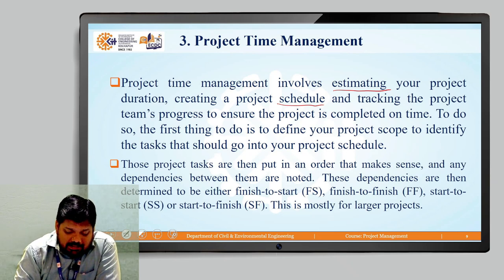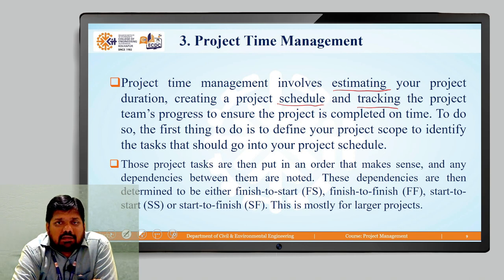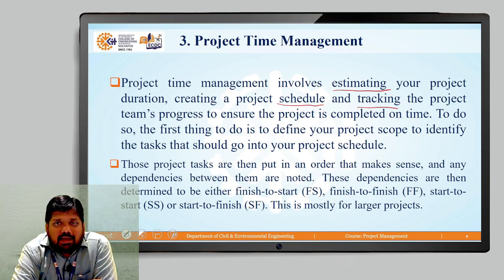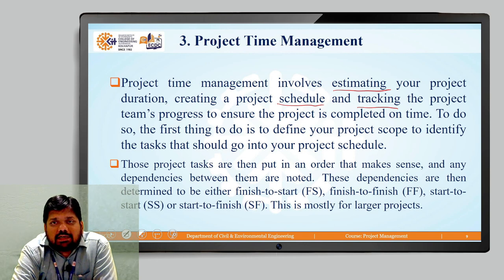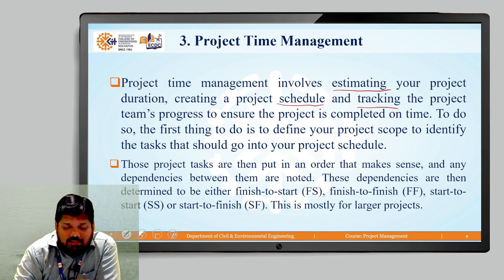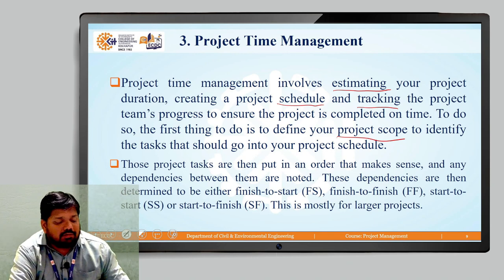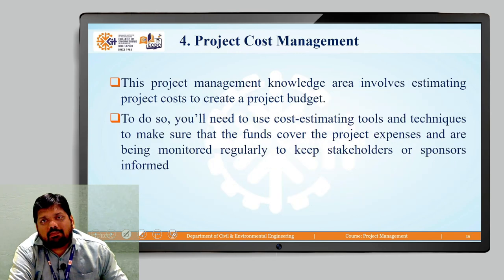The next activity is tracking the project progress. We have to ensure that the project is completed within time. Certain milestones or stages are defined, and according to that we plan and schedule the entire project. The first thing to do is to define the project scope to identify the tasks that should go into your project schedule. Once you define it clearly, it will become very easy to manage project time — to schedule and estimate it.